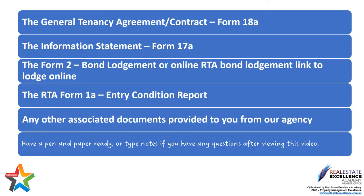You should have the following documents in front of you: the Form 18a, the general tenancy agreement contract, the RTA Form 17a information statement. Bond information will be provided to you from our agency, along with RTA lodgement links to lodge your bond online direct to the RTA, or the Form 2 bond lodgement. The RTA Form 1a entry condition report will be provided to you on or before the day you take possession of the property — usually the day you pick up the keys. Any other associated documents from our agency will be included as well.